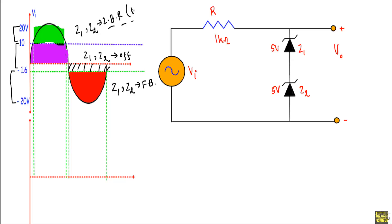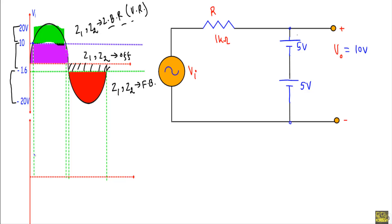For the portion where Z1 and Z2 are in the Zener breakdown region, they act as voltage regulators. I can replace them with their corresponding equivalent circuits — two voltage sources in series. The positive terminal connects to the positive terminal of the output voltage and the negative terminal to the negative terminal of Vo. Therefore, the output is fixed at +10V. From this point to this point, the output will be fixed at +10V.